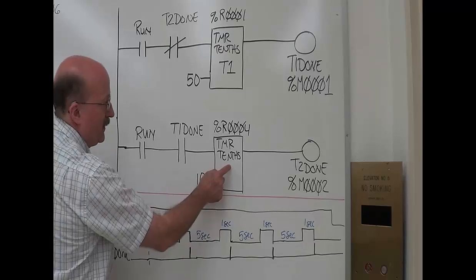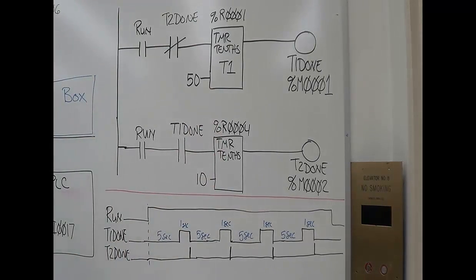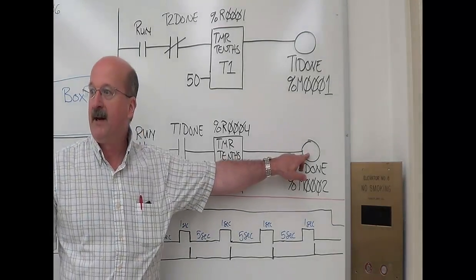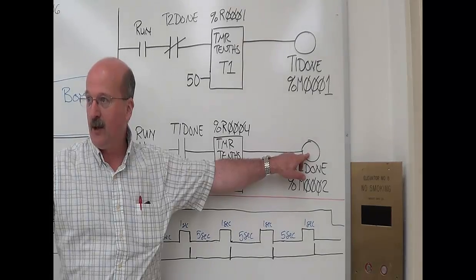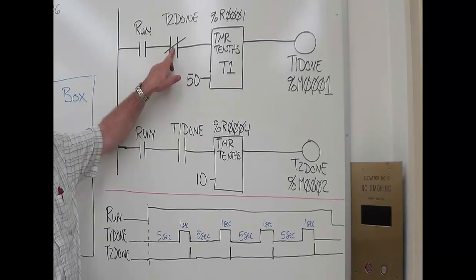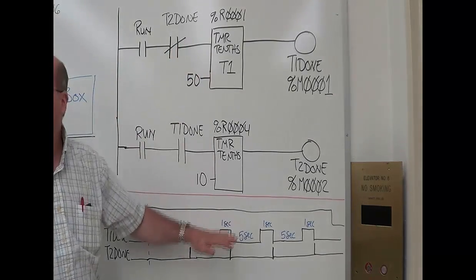So your output, these are both on delay timers. T2 done is not a one-shot coil, it's a standard coil, but it's effectively a one-shot coil because this will come true. The next scan, this will open up, reset the timer, and shut everything off for one scan.